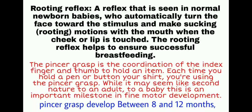The pincer grasp is the coordination of the index finger and thumb to hold an item — for example, when you hold a pen or button your shirt. While it may seem like second nature to an adult, to a baby this is an important milestone in fine motor development. The pincer grasp develops between 8 to 12 months.